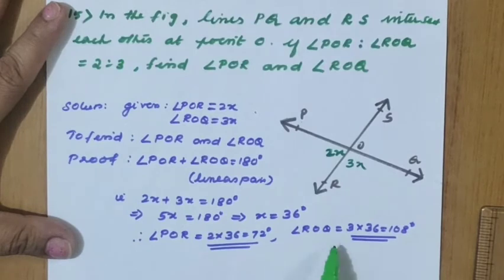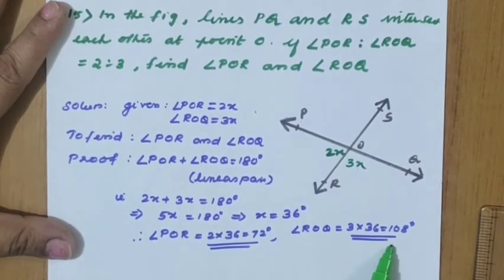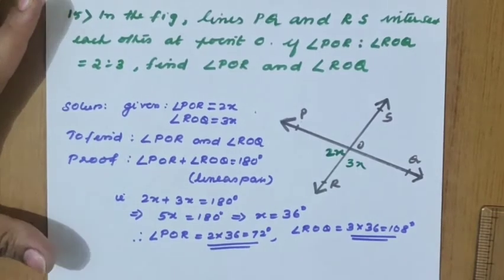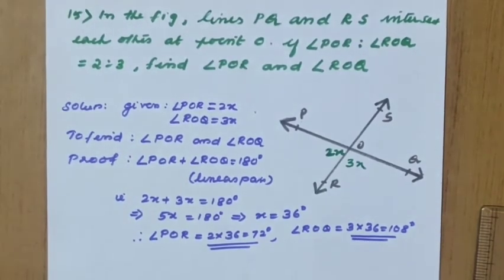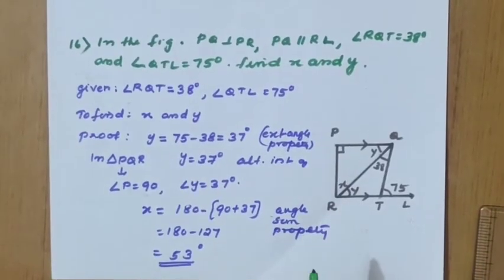Angle POR equals 2x, that is 2 into 36 equals 72 degrees. Angle ROQ equals 3x, that is 3 into 36 equals 108 degrees.